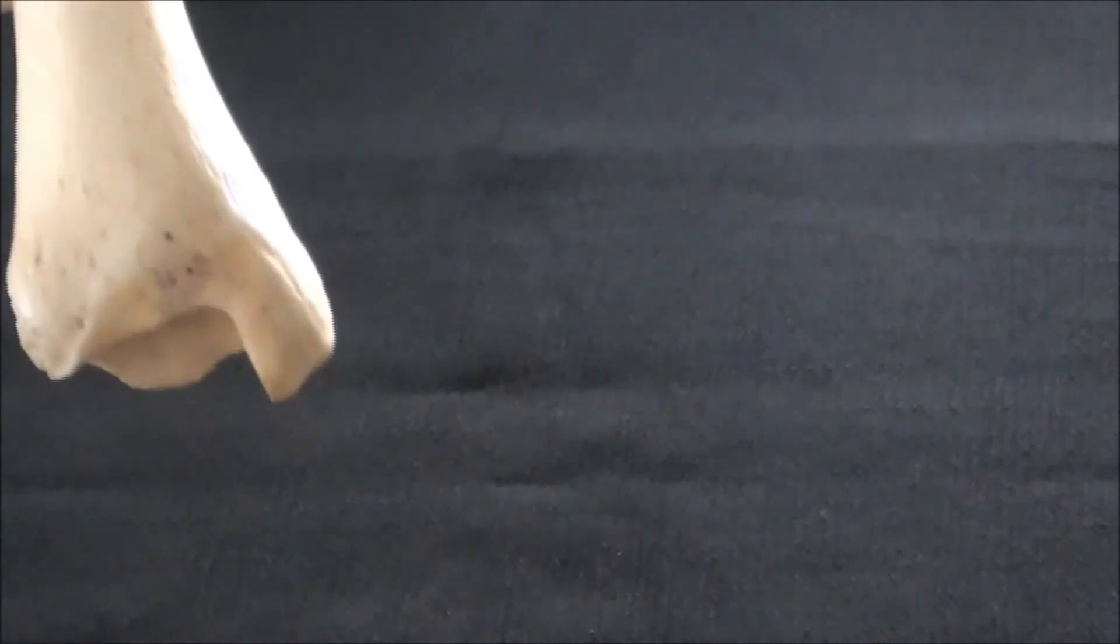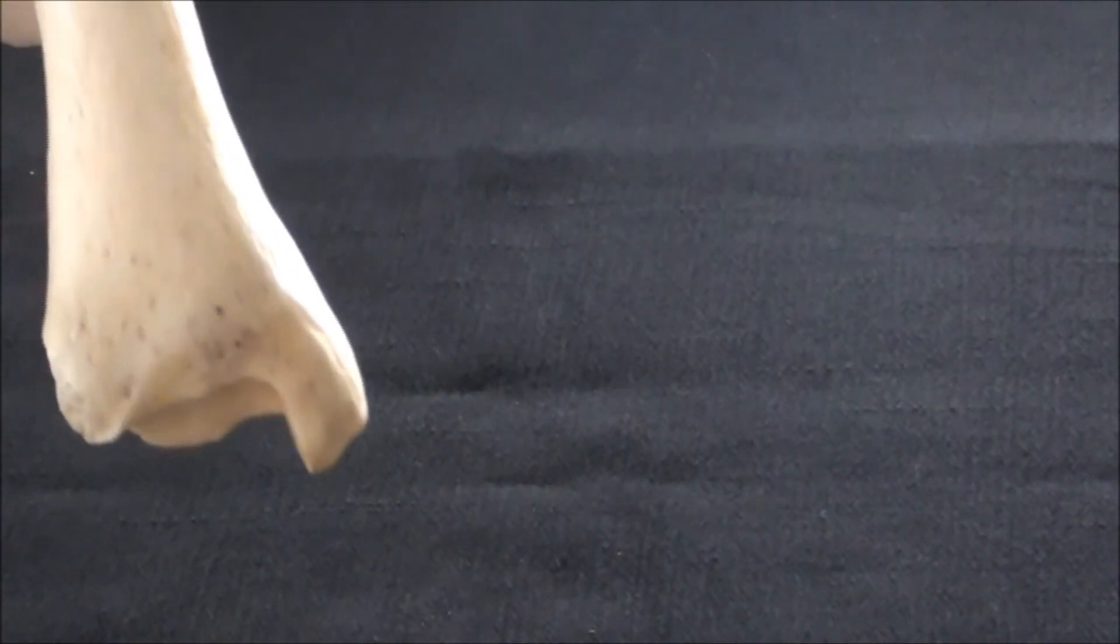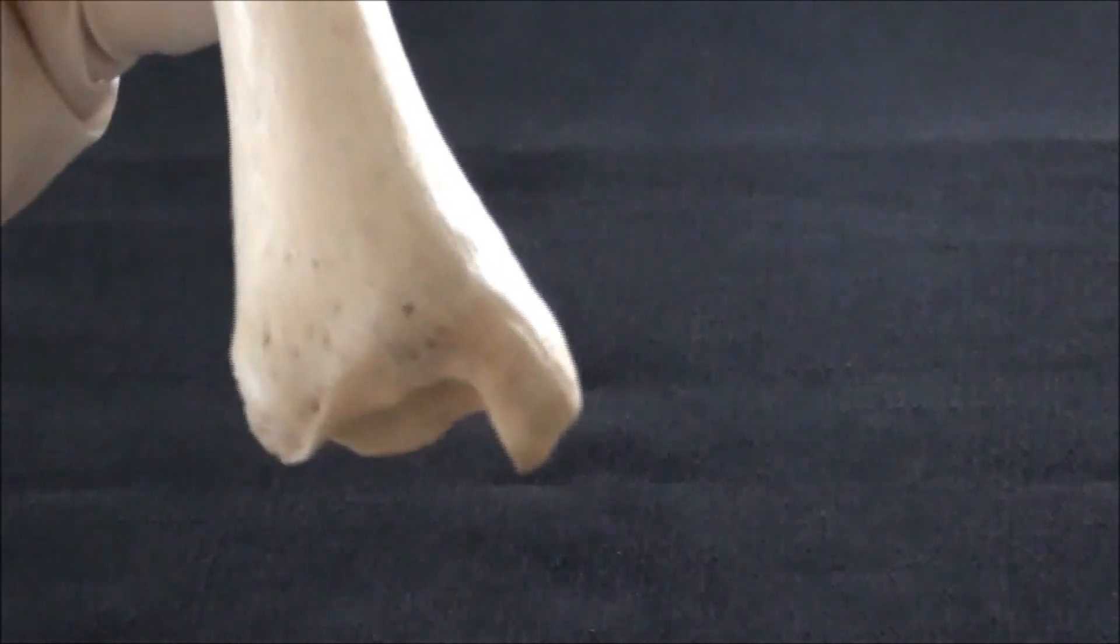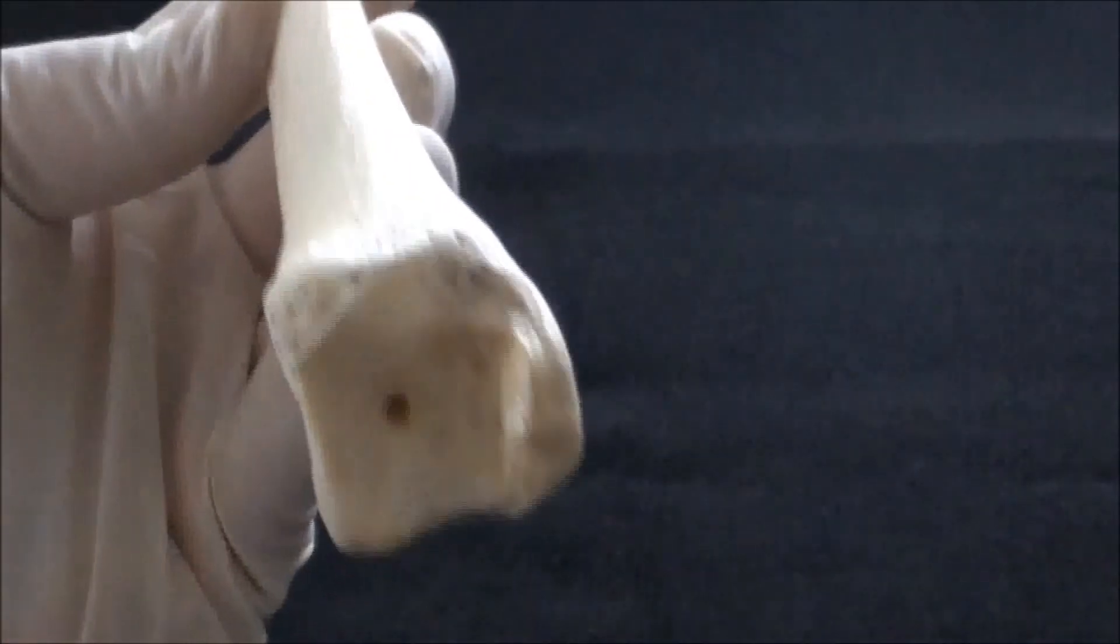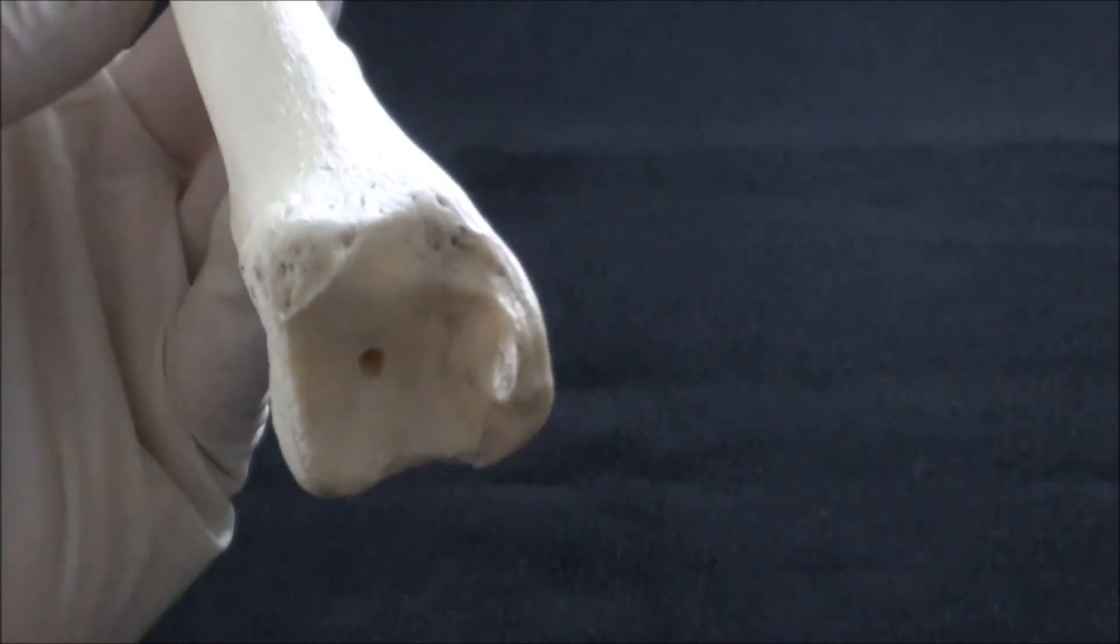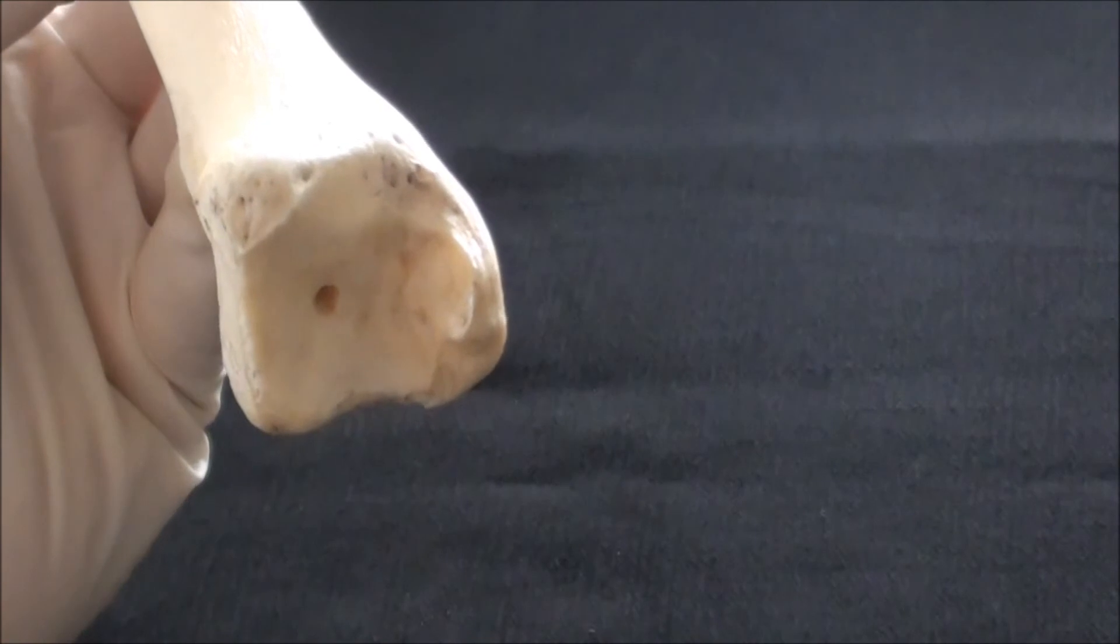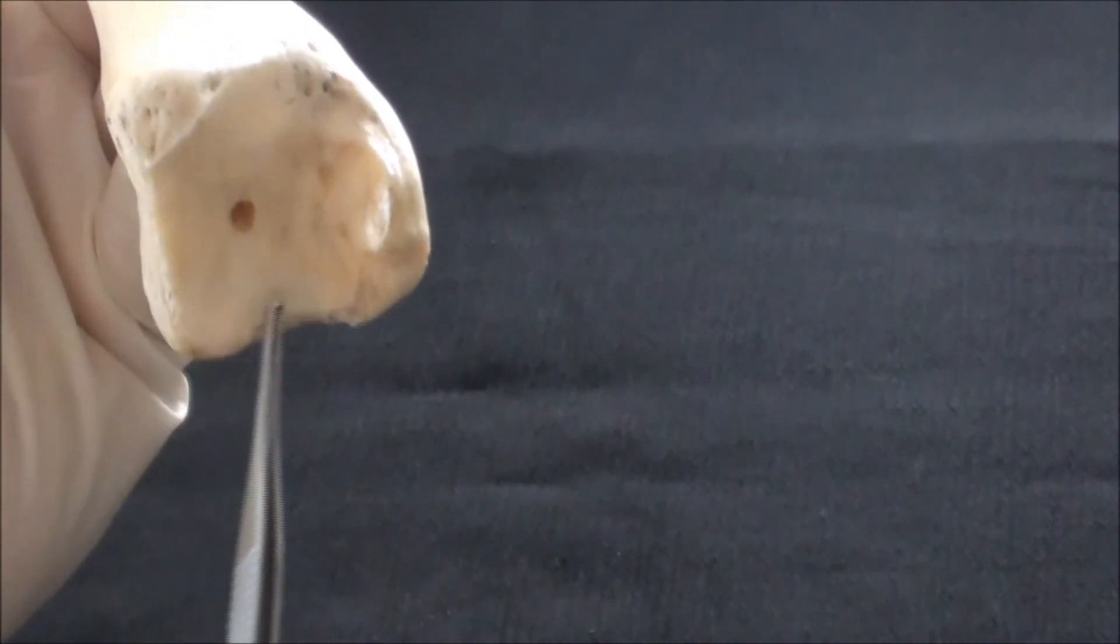Distally, the tibia expands in a more triangular form, making some form of pyramidal structure. As a result of this enlargement, we're observing on the very inferior aspect of the bone two different articular surfaces that will make contact with the same bone of the foot. That bone is the talus. There is this articular surface...